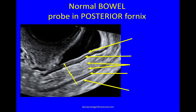Looking at normal bowel first — the probe is in the posterior fornix. You can see the normal posterior vaginal wall and the normal overlying peritoneum; it's not thickened. This is the pouch of Douglas with a tiny little bit of fluid. You can see that this white layer is the serosa. The dark layer here with the white line in between is the muscularis layer — the white line is where the outer longitudinal and inner circular fibres join each other, giving a little white line of connective tissue, which confirms that's the muscularis.